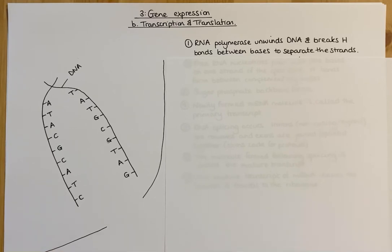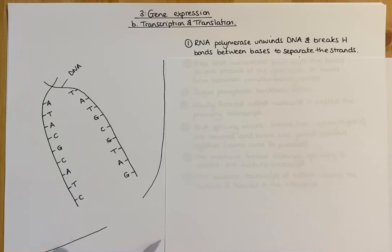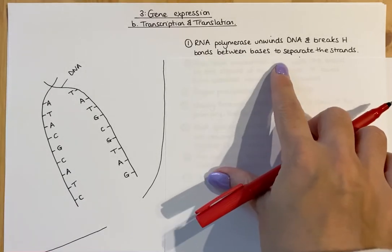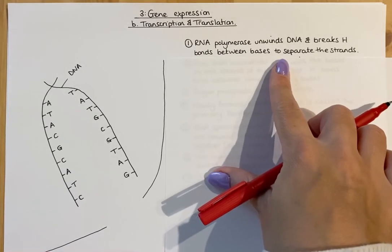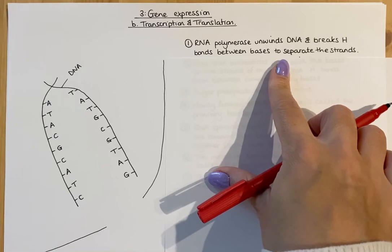Previously when we talked about DNA replication, it would be DNA polymerase that would add nucleotides to the strand. For transcription, RNA polymerase doesn't add nucleotides — it just unwinds the DNA and separates those strands.